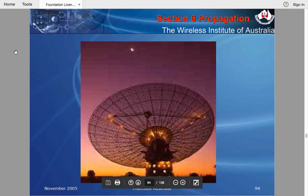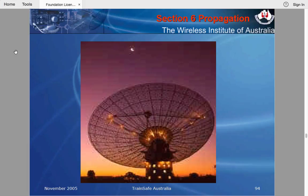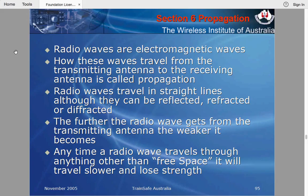Good evening, this is VK4SJH Steve, continuing with the foundation slide lectures, section 6: propagation. Radio waves are electromagnetic waves — there's an electric field component and a magnetic field component, they're perpendicular to each other. That's why they're called electromagnetic waves, sometimes referred to as EM waves.